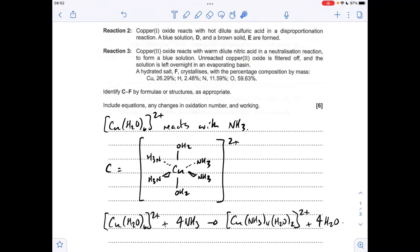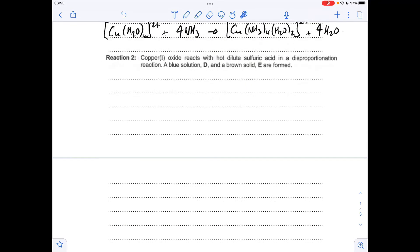Moving on to reaction two. The copper starts out in the +1 oxidation state and we're told it's a disproportionation reaction, so the copper(I) is oxidized and reduced. In the blue solution it's going to be in the copper 2+ form - that's your oxidation step - and when it's the brown solid it's the element copper, so it's in its zero oxidation state.